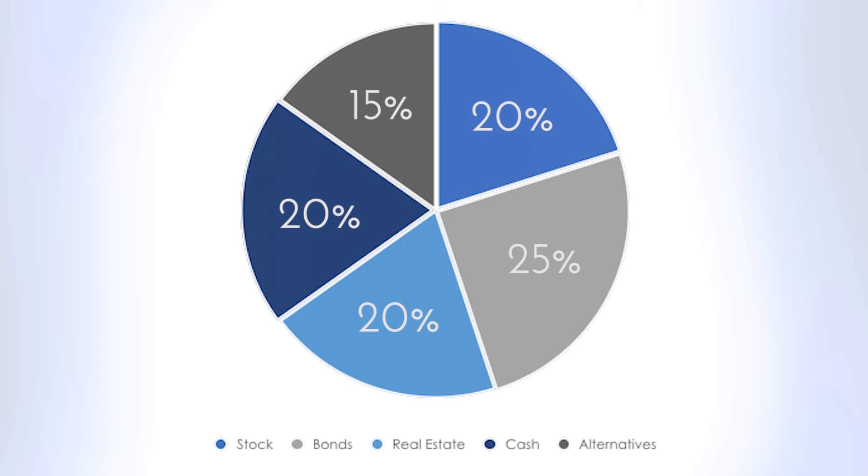Alternatives are anything that aren't stocks and bonds. The risk-averse investor likes alternatives that are conservative, so you might have things like precious metals — silver and gold — or currency, something that doesn't move with the market. The overall goal is to not lose money, so you might even have physical gold, and we call this alternatives because it is not stocks and bonds.